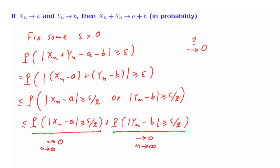In essence, here we are applying what we established earlier about convergence of numbers: if a sequence converges to 0 and another sequence converges to 0, then the sum of these sequences also converges to 0 as n goes to infinity. We have shown that for any fixed positive epsilon, no matter how small, the probability that Xn plus Yn is more than epsilon away from a plus b must go to 0. That is exactly what we established here, and this completes the derivation.